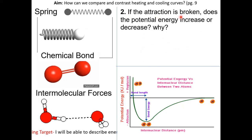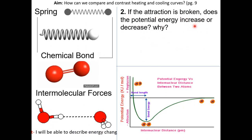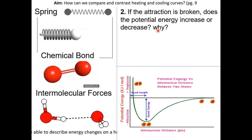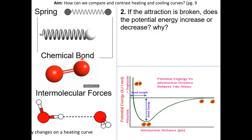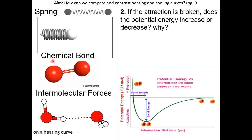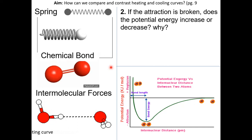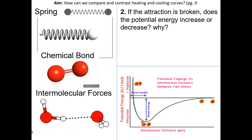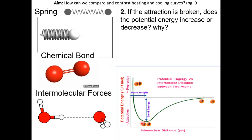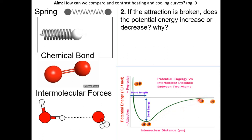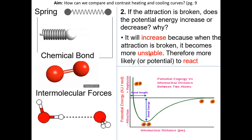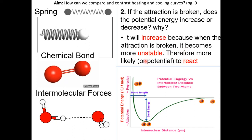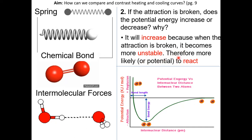If the attraction is broken, does the potential energy increase or decrease, and why? Remember: it takes energy to break this attraction. Once you break the attraction, the particles will move away from each other. As you can see from the graph, the potential energy increases, because once the attraction is broken, it becomes more unstable — therefore it is more likely or more potential to react. So the potential energy increases.